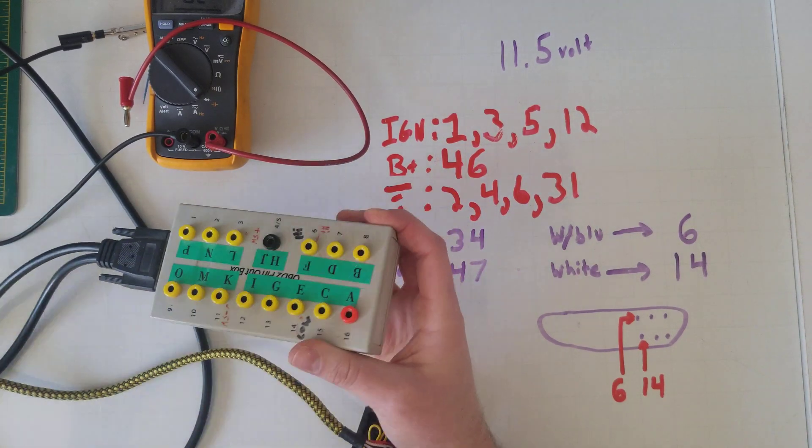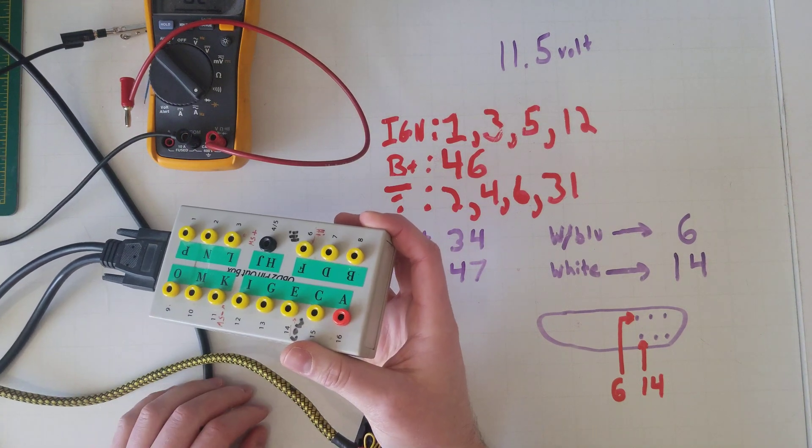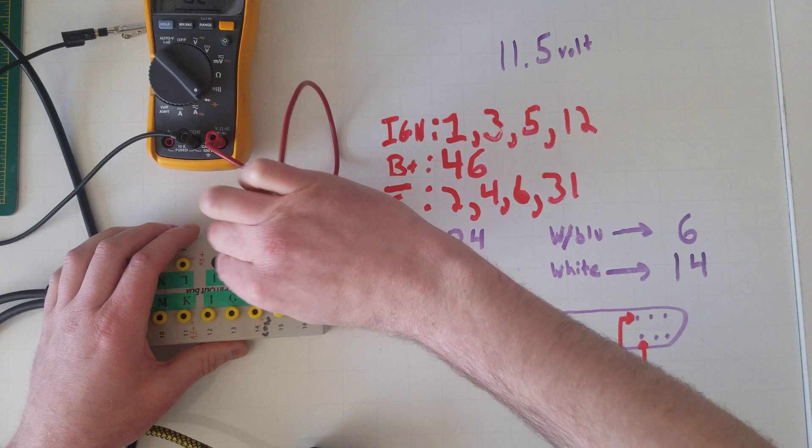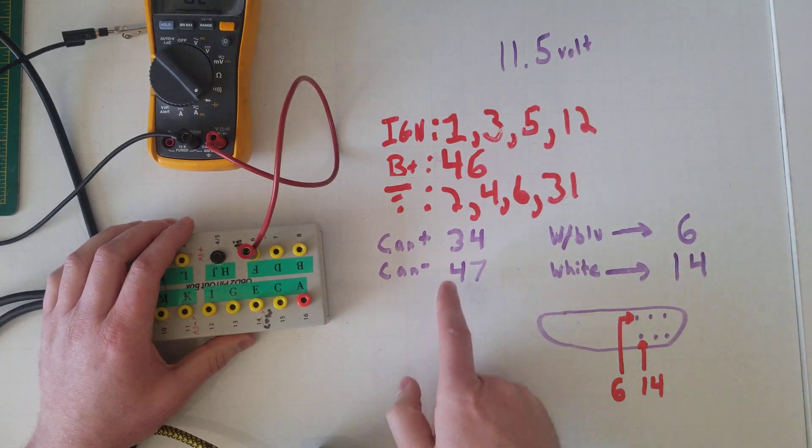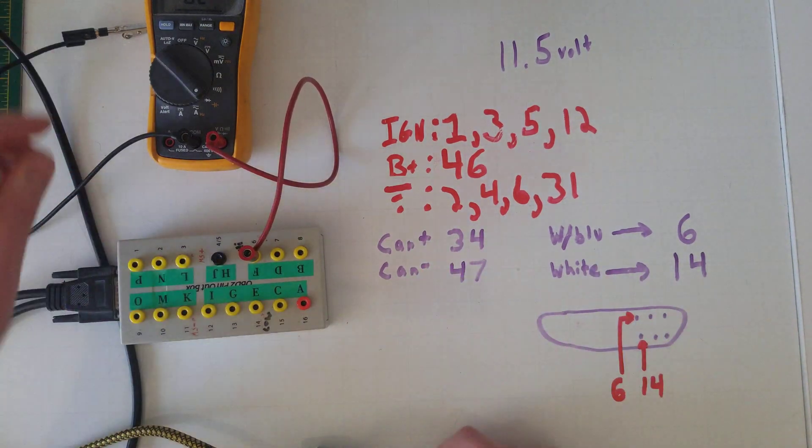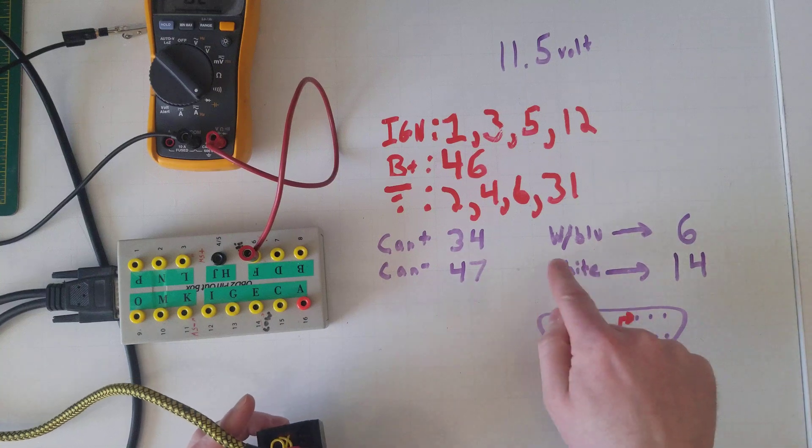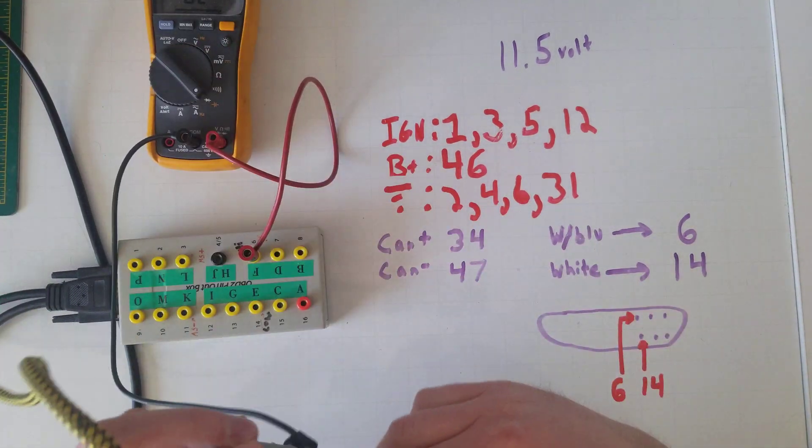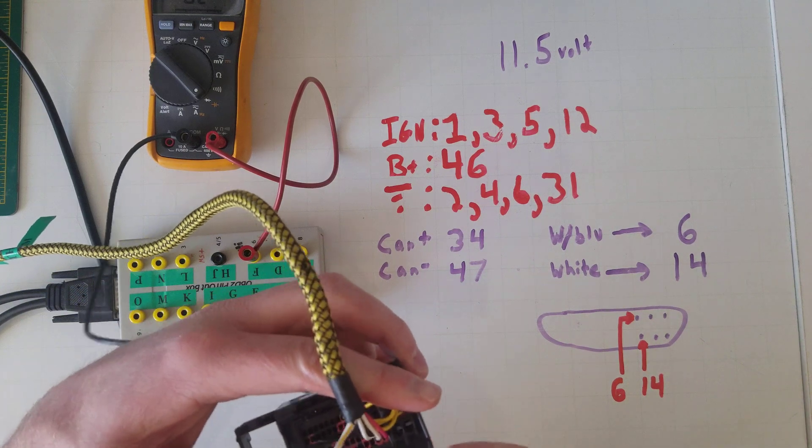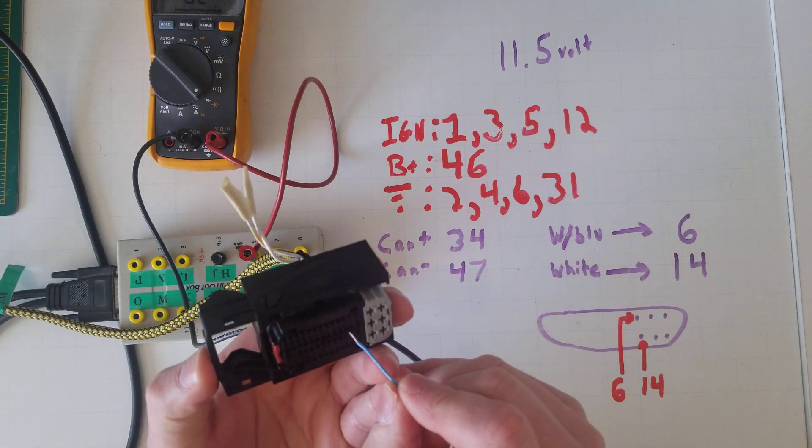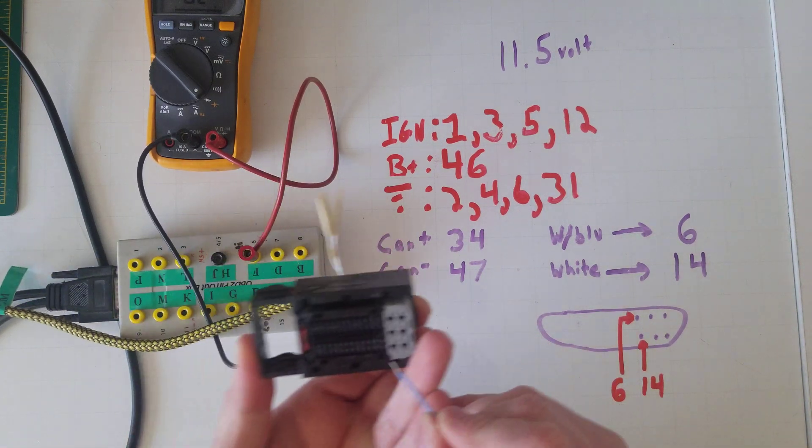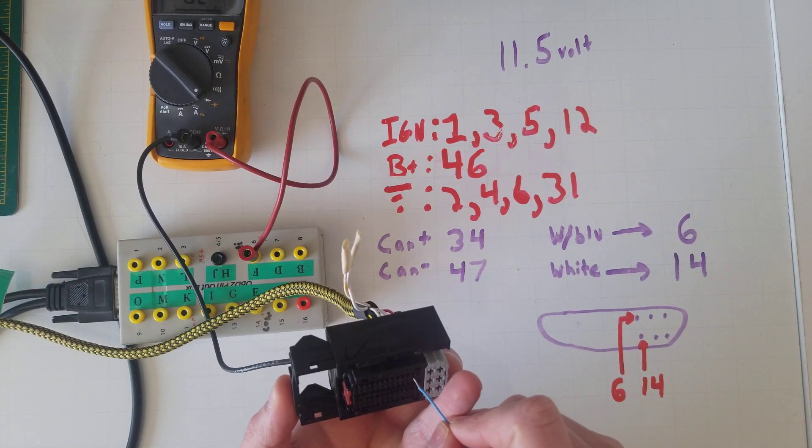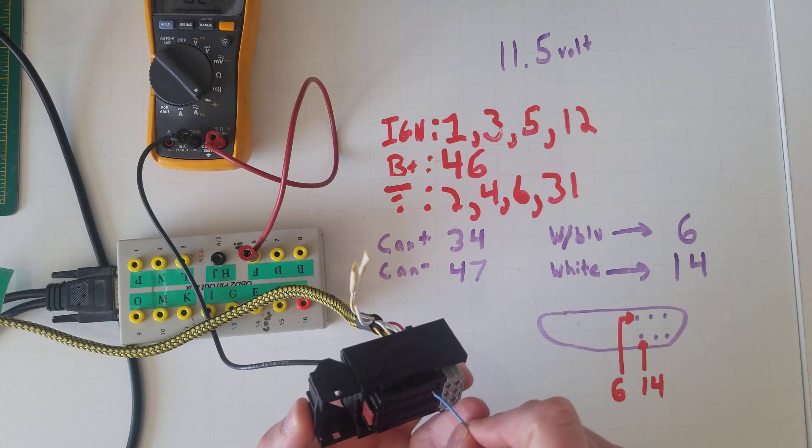You're gonna have to do it the hard way with the actual little connector. You need really long leads probably and maybe a helper. So I'm gonna go to pin 6 which is gonna go to 34 which is the CAN high, and apparently it's a white with a blue stripe. So I don't have that color coordinated right. Alright, there's 34.